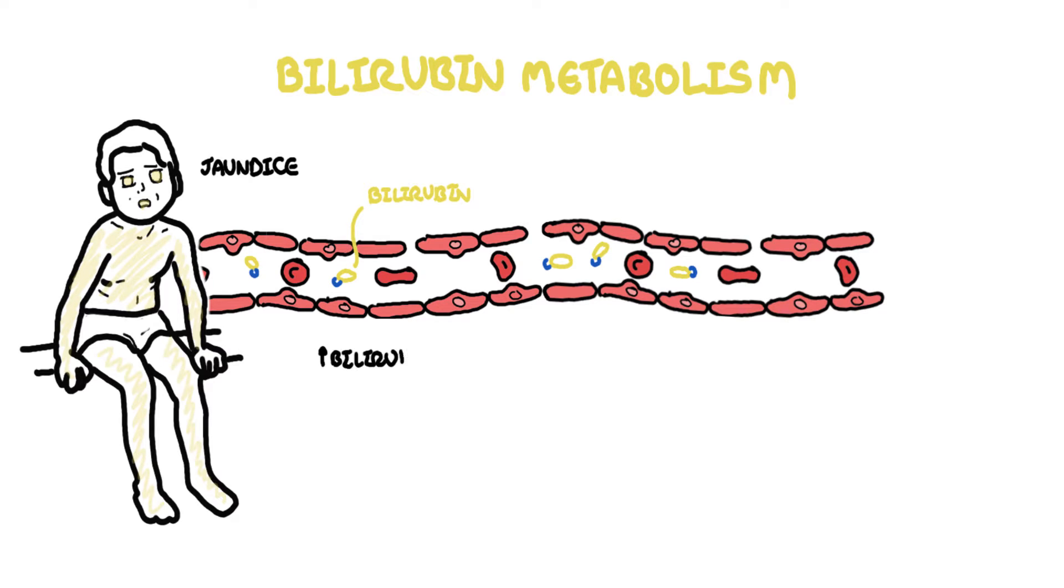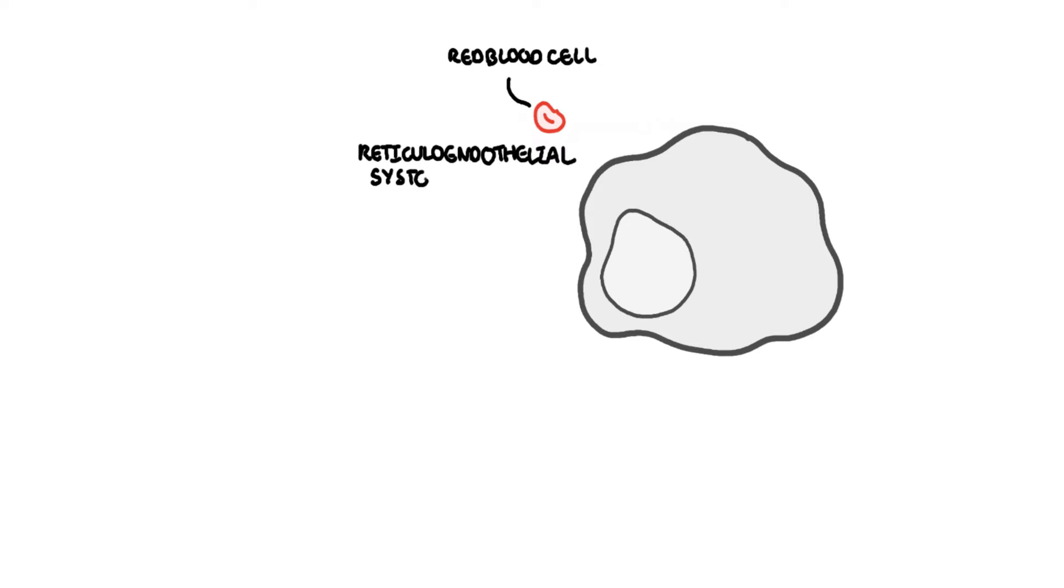Bilirubin is formed by breakdown of heme present in hemoglobin. The story starts with an old red blood cell which enters what's called the reticuloendothelial system, which is in your liver and in your spleen.